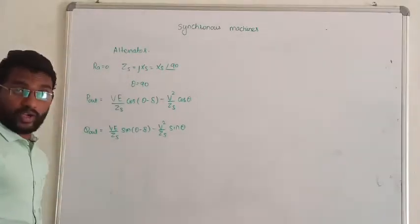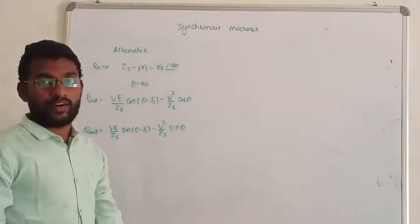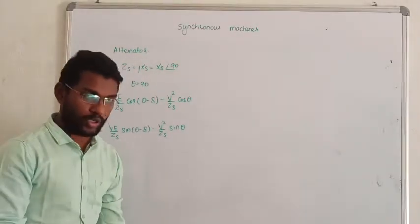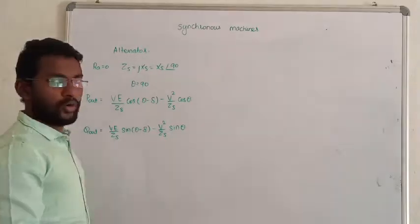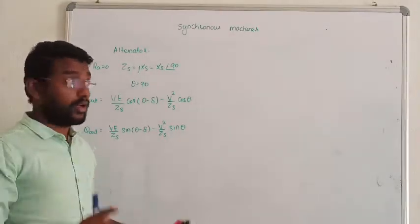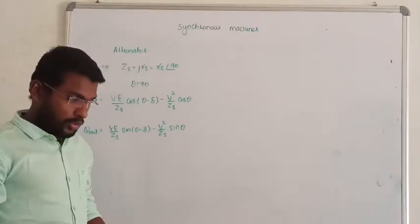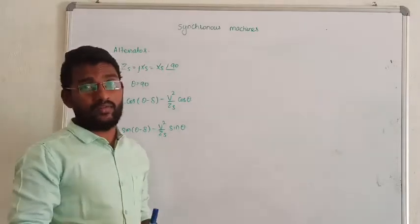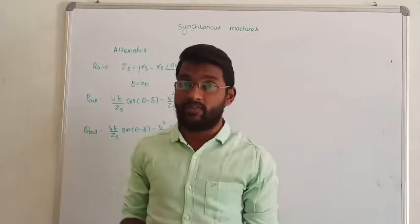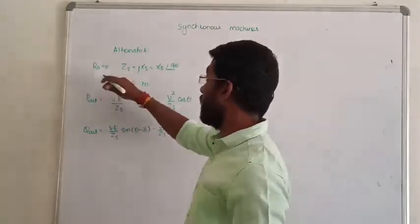Next, we are going to see the simplified version of the alternator and motor analysis. What is the voltage drop in the alternator? Resistance drop? Reactive drop? In the simplified analysis, we are neglecting the effect of resistance of the armature coil.